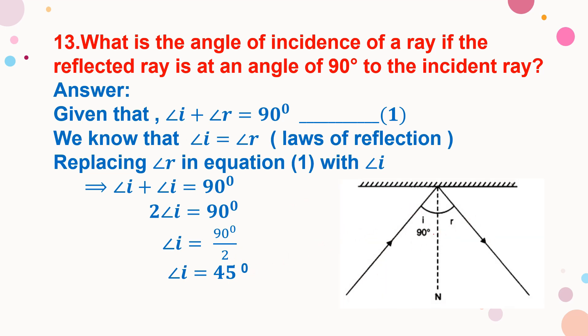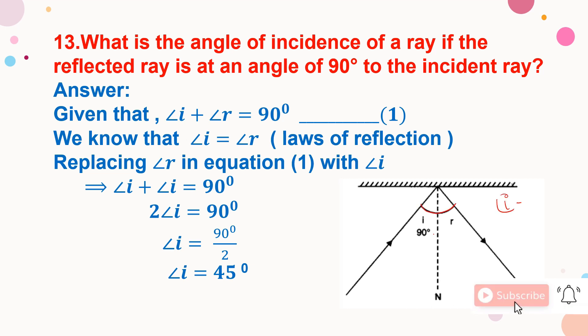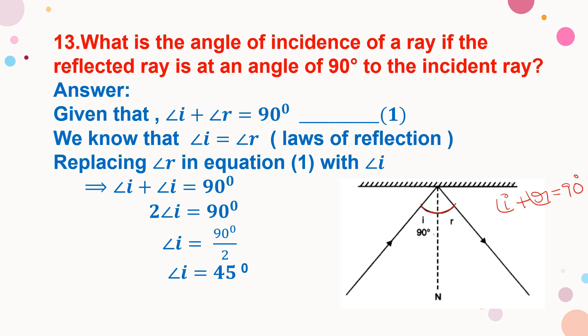In this situation, they have given that angle I and angle R: angle I plus angle R equals 90 degrees. They are asking what is the angle of incidence. From the law of reflection, angle I equals angle R. Given that angle I plus angle R equals 90 degrees, substitute angle I equal to angle R into the equation.